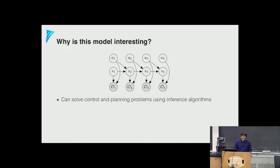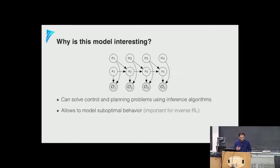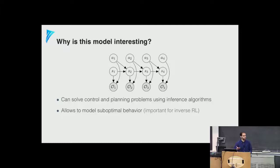Given this graphical model, we can run queries on it — conditional and marginal distributions. We can solve control and planning problems by running inference on the graphical model. The model also captures not just fully optimal behavior (V* and Q*), but partially optimal or near-optimal behavior, because we've introduced a probabilistic notion of optimality: even if O=1, its probability is proportional to the reward at that timestep.